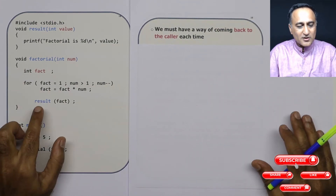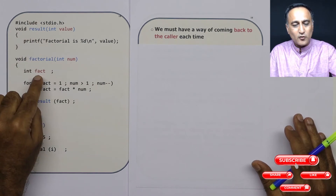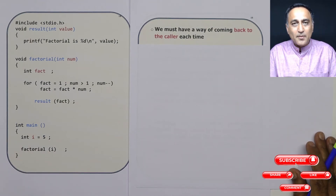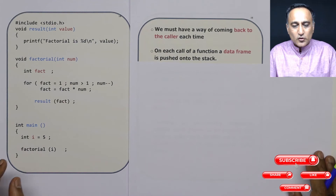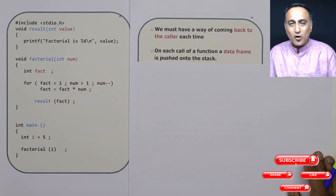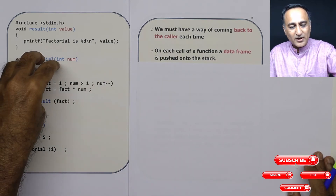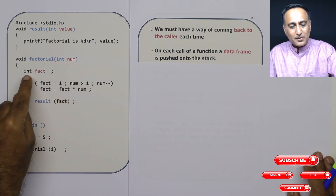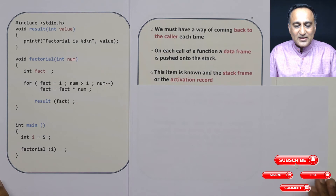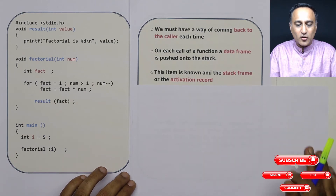When main calls factorial and factorial calls result, after we execute result there should be a way of coming back to factorial — coming back to the caller function. This is achieved by popping the activation record. Each time a function is called, a data frame or information about that function is pushed onto the stack. For example, when factorial is called, the parameter 'number' and the local variable 'fact' are pushed onto the stack. This item maintained in that box is known as the activation record or the stack frame.